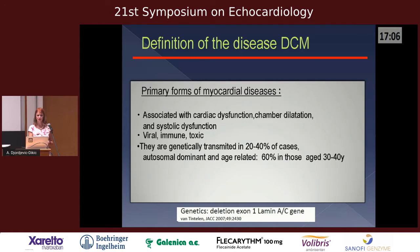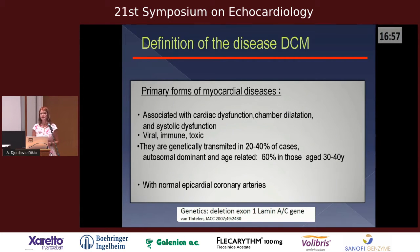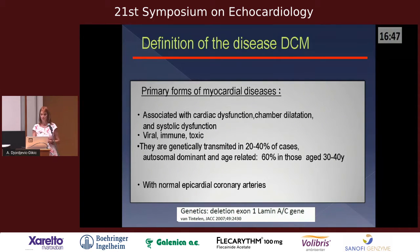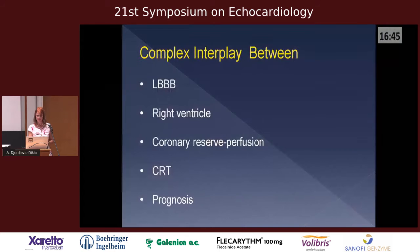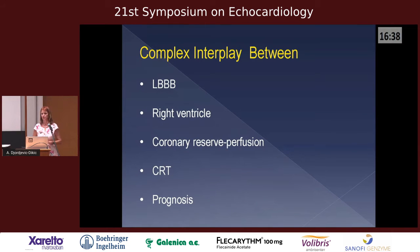In its idiopathic form it has normal epicardial arteries, but chronic ischemic disease leads to dilated ischemic cardiomyopathy. Both are very bad diseases with a bad progression. This is a complex interplay between left bundle branch block, right ventricle, coronary flow reserve, perfusion, CRT, and prognosis — and I will go through each part.